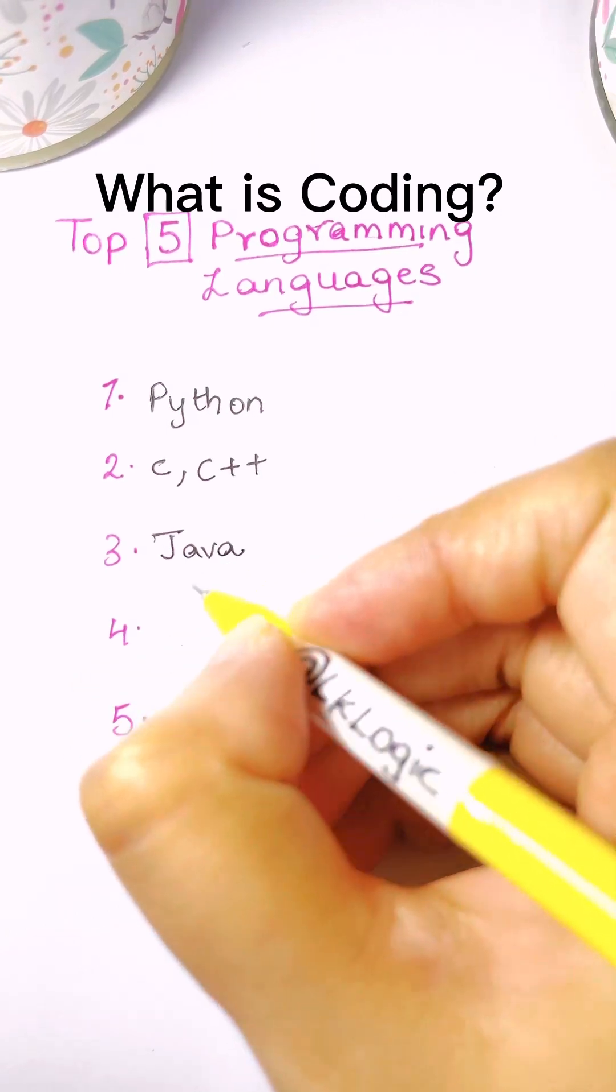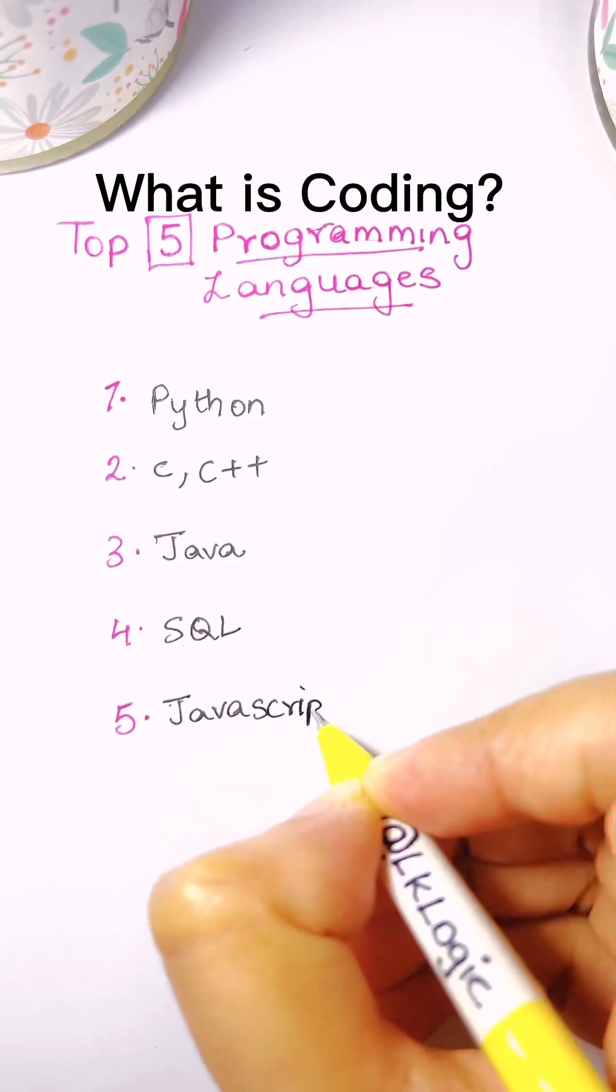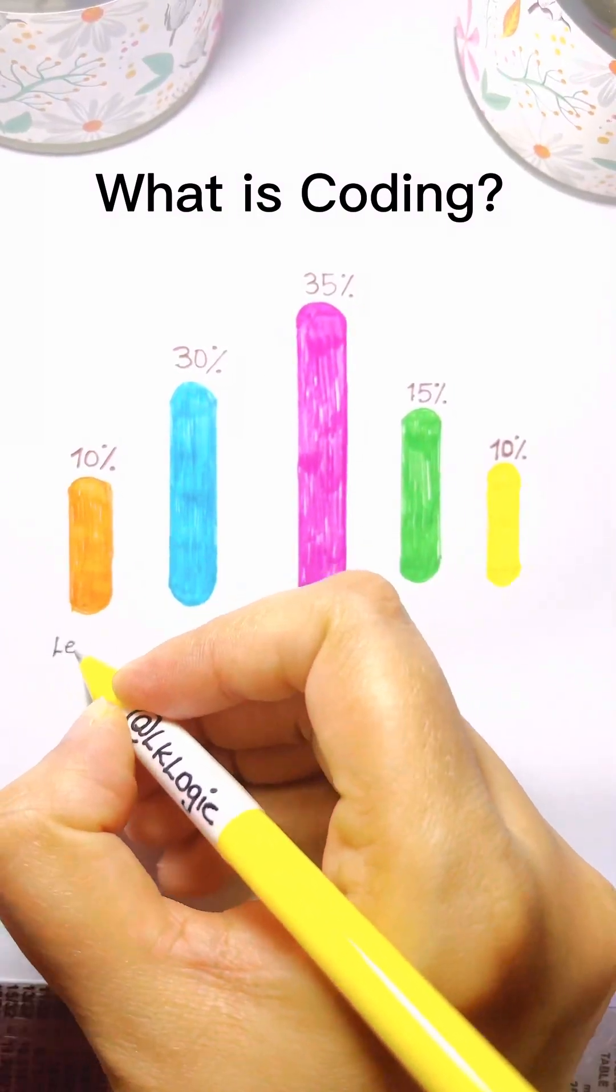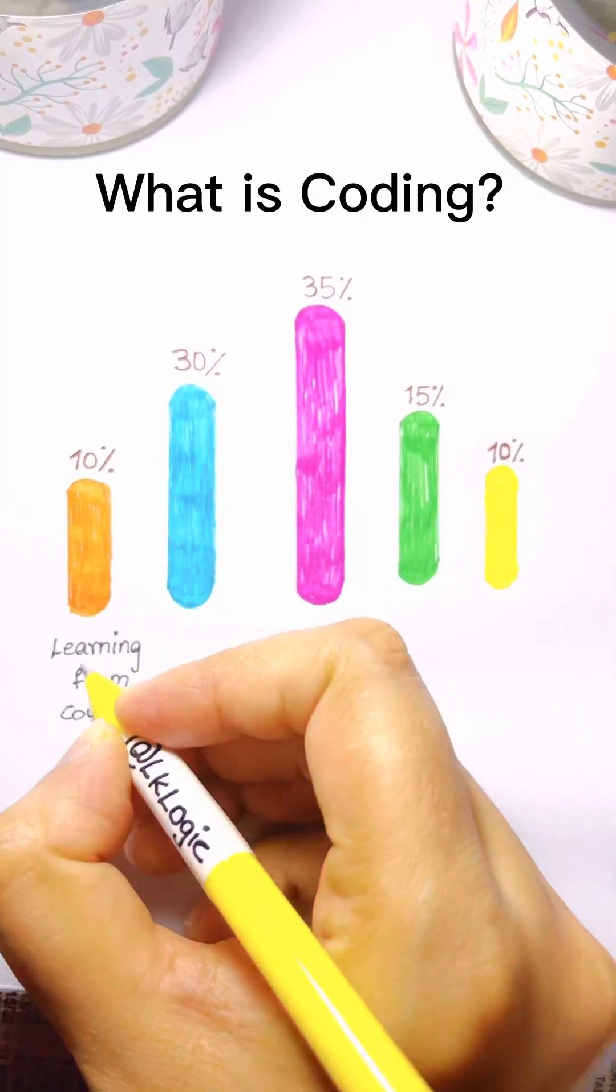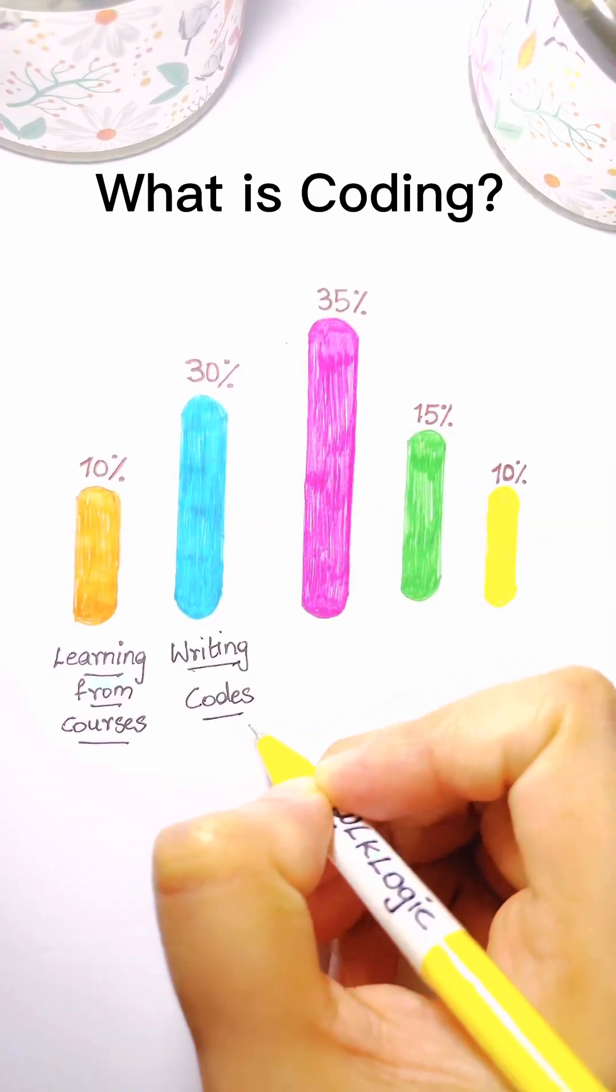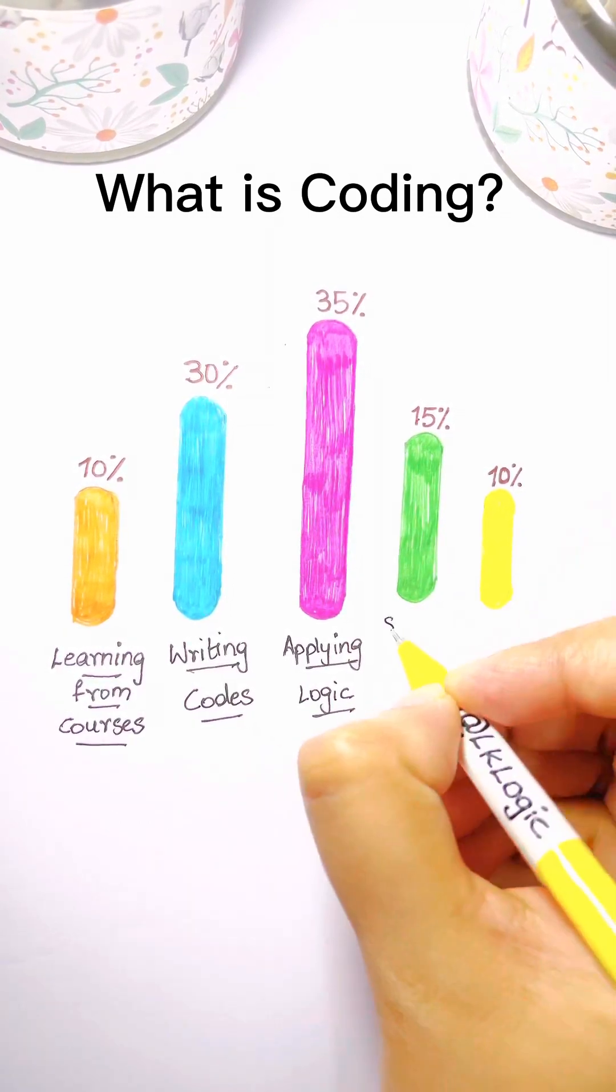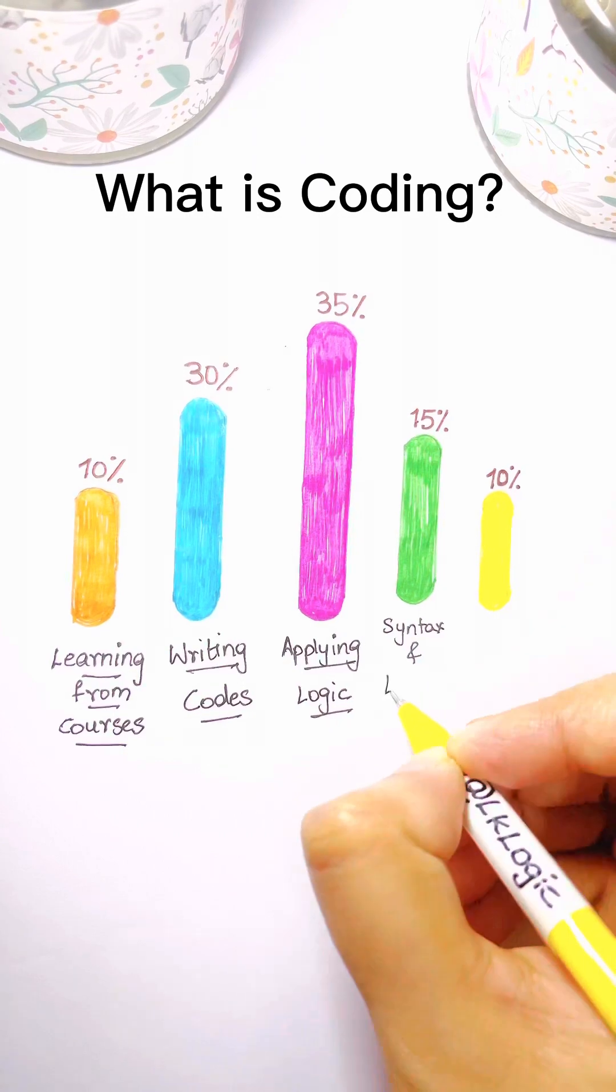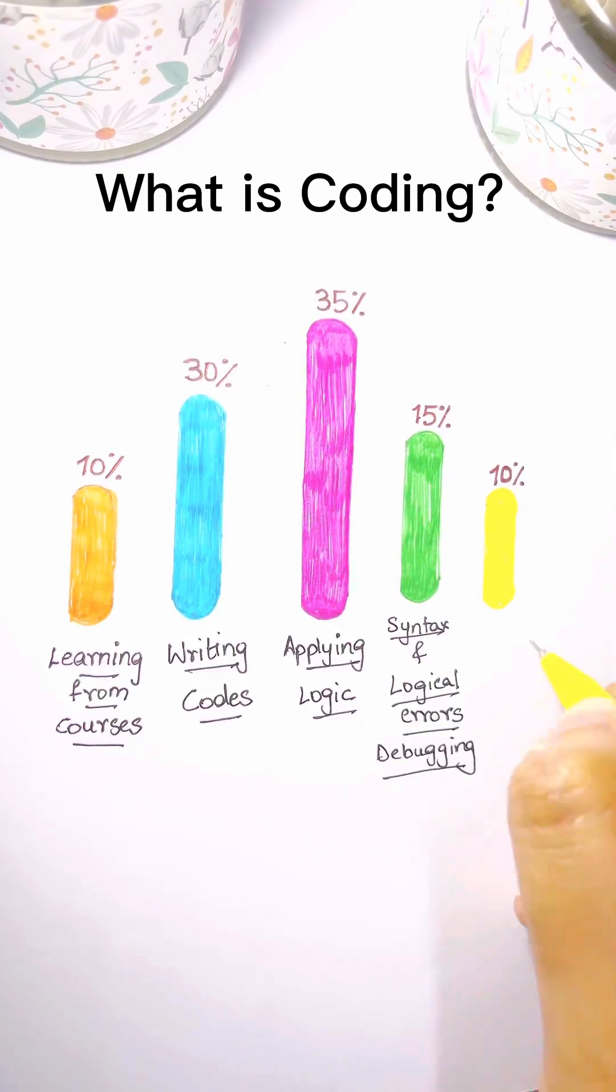So coding is mainly 10% learning from courses, 30% writing codes, 35% applying logic, 15% syntax and logical errors debugging, and 10% code compilation.